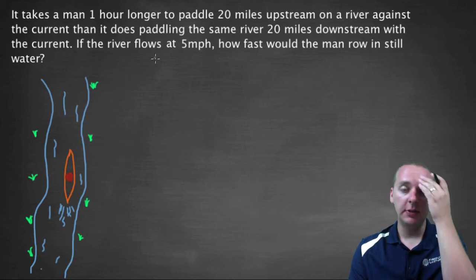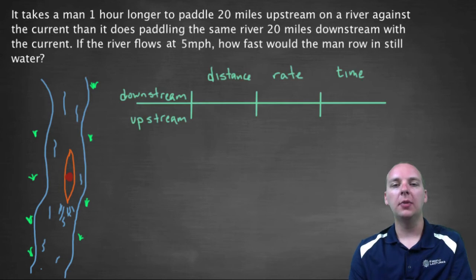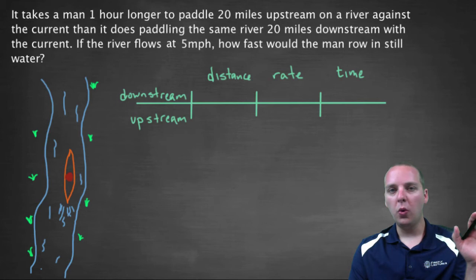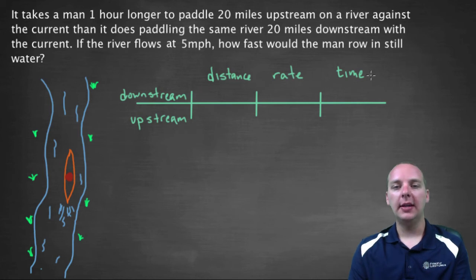So if you've watched our previous videos, you know kind of the general setup of what we're going to do here. I highly recommend making up a chart and one row is going to represent all the information about going downstream. And then the other row will represent all the information about going upstream. So we'll have distance, rate, and time. And notice we actually only need two of these because the third one will be in terms of the other two really.